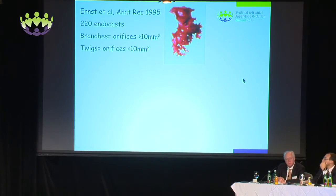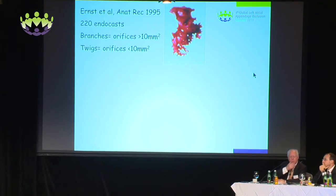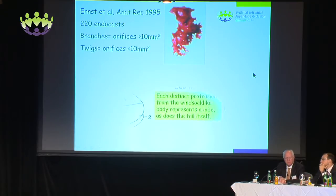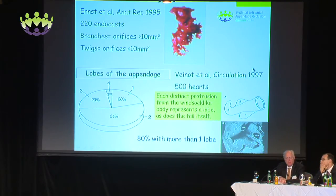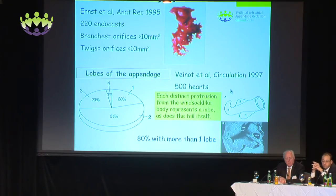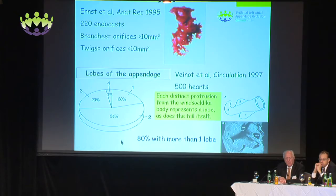Ernst's study in 1995 made 220 endocasts, defining branches as those with orifices more than 10 mm² and twigs as orifices less than 10 mm². Whereas Venu's publication, using 500 heart specimens, defined lobes as each distinct protrusion from the windsock-like body — as does the tail itself. Indeed, the majority — 54% — had two lobes, but importantly 80% had more than one lobe.